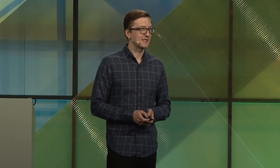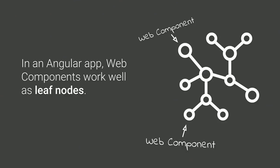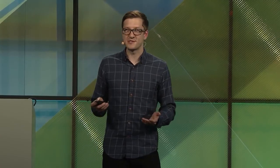Component philosophy: what makes a good component? First and foremost, if you're building web components to be used inside an Angular app, these components work especially well as leaf nodes — stuff you really can't break down any further, pretty concrete UI. If you were to graph the structure of your application, these would be the terminating nodes at the end. You're already familiar with leaf nodes: interactive controls like button, select, and input are already leaf nodes.